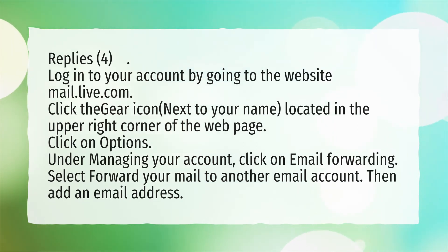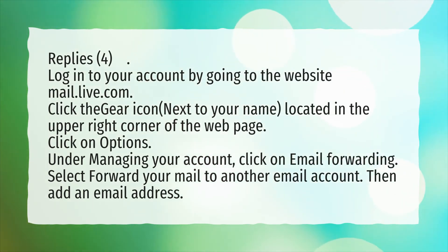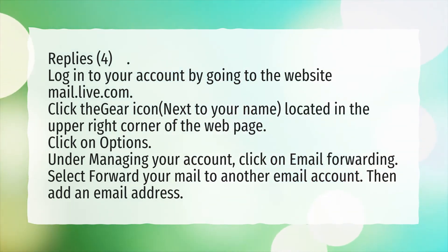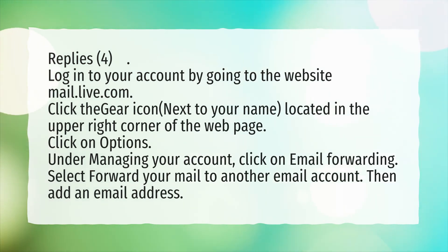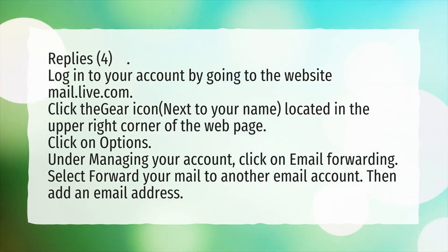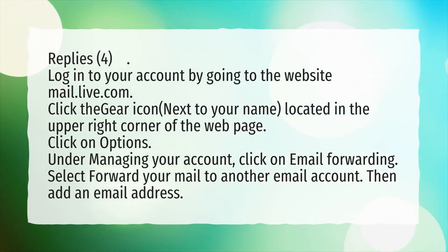How do I transfer my Microsoft account to another email? Log into your account by going to the website mail.live.com. Click the gear icon next to your name, located in the upper right corner of the web page. Click on Options. Under Managing your account, click on Email Forwarding. Select Forward your mail to another email account, then add an email address.